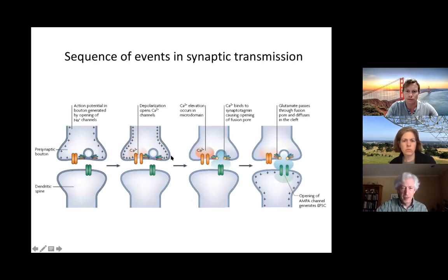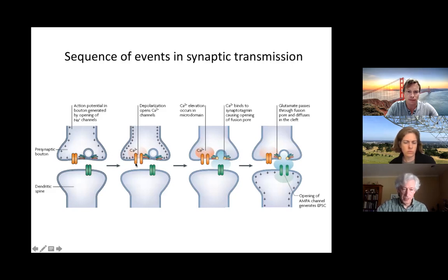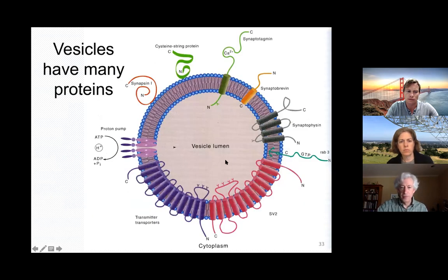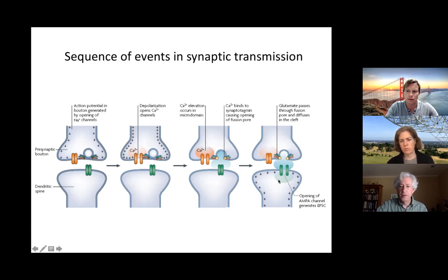Looking in more detail at the spatial arrangement: when a synaptic terminal depolarizes, voltage-gated calcium channels sense that depolarization, and calcium enters. The proximity of the calcium channels to the vesicles — right next to each other — creates a very small microdomain where there's an elevation in calcium. There are sensors that sense that calcium, and the vesicles that are docked at the membrane, just poised to fuse, sense that calcium and immediately fuse. It's a very fast process, and neurotransmitter is released into the cleft.